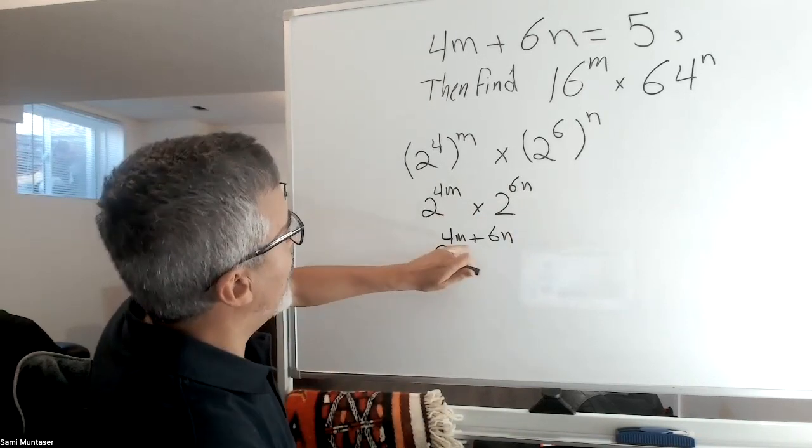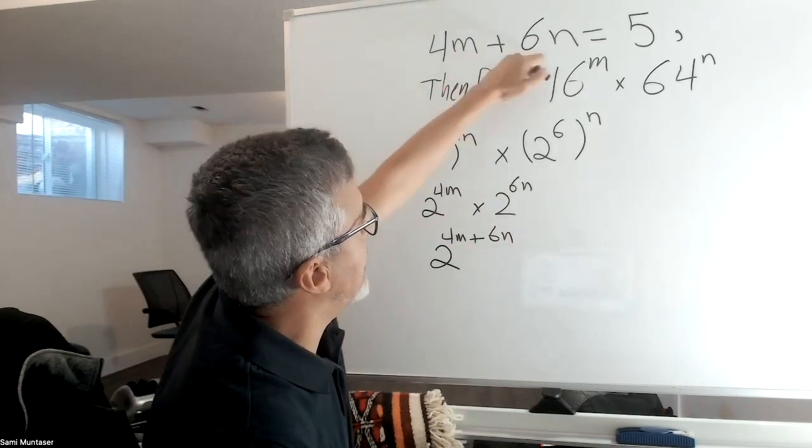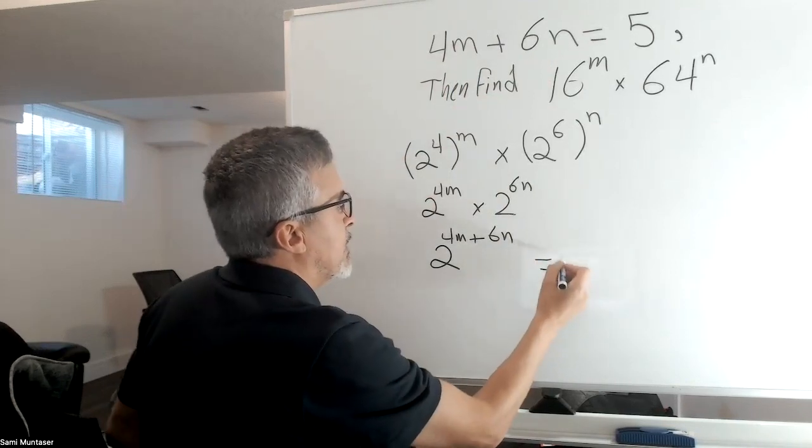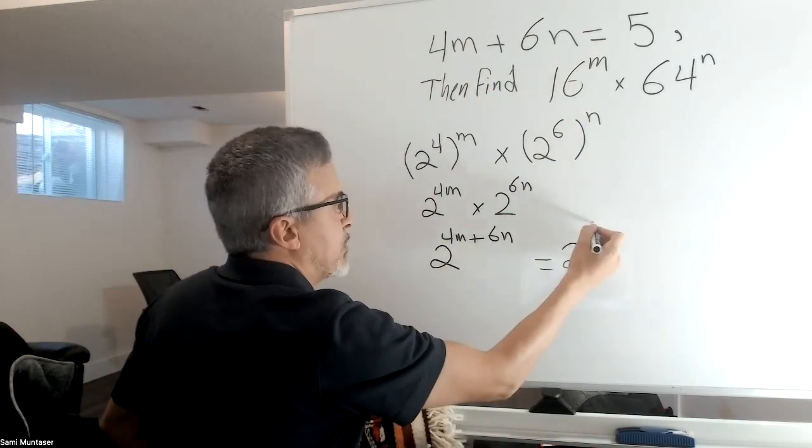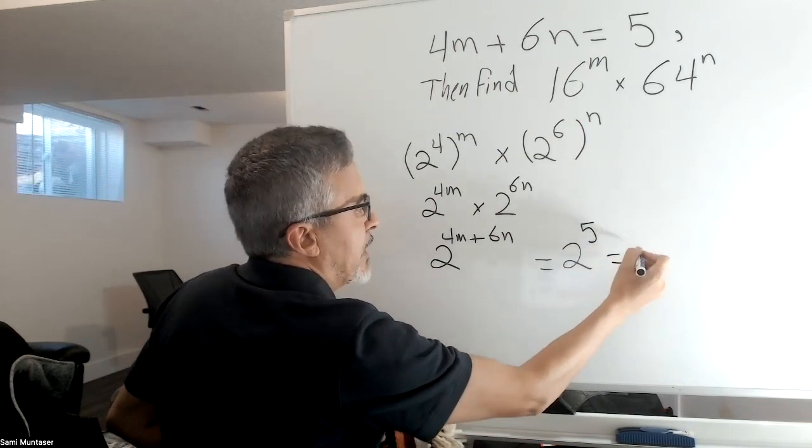And now, 4m plus 6n is the same as this, so we could substitute the 5 since this equals 5. Substitute the 5 right here, and then we get...